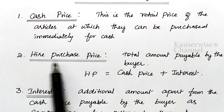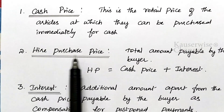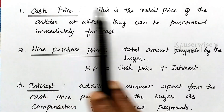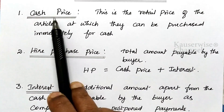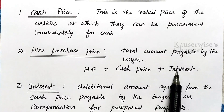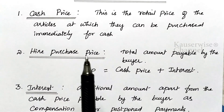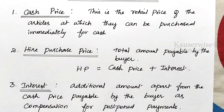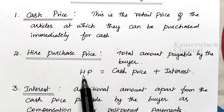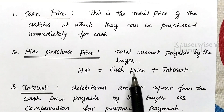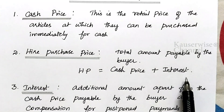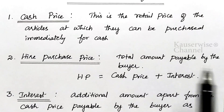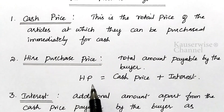The next one is hire purchase price. Hire purchase price consists of cash price — that is, actual retail price — plus interest, because you are postponing the payment and paying the amount on an installment basis. The total amount payable by the buyer to the seller is called hire purchase price.